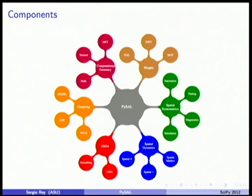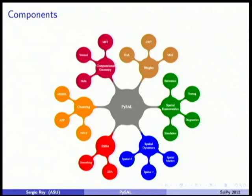The library has sub-packages for different types of spatial analysis and geocomputation. At the core are spatial weights — the key part of expressing spatial correlation and neighbor relations. We have a computational geometry library to build different weight definitions, algorithms for building spatially-constrained regions, the ESDA module for global and local autocorrelation tests and map classifiers, a spatial dynamics module for sequences of maps, and a spatial econometrics module for regression with spatially referenced data.